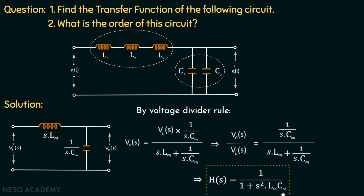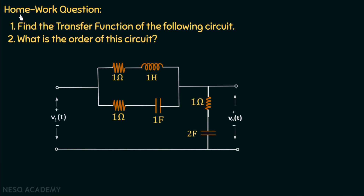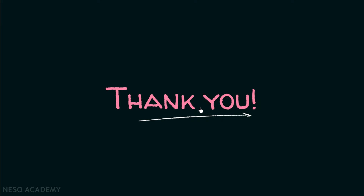This is the transfer function for the equivalent circuit. We have calculated the transfer function and determined the order of the circuit. Try the homework question on your own and post your answers in the comment section. If you have any doubts, post them in the comments as well. Thank you for watching — see you in the next lecture.